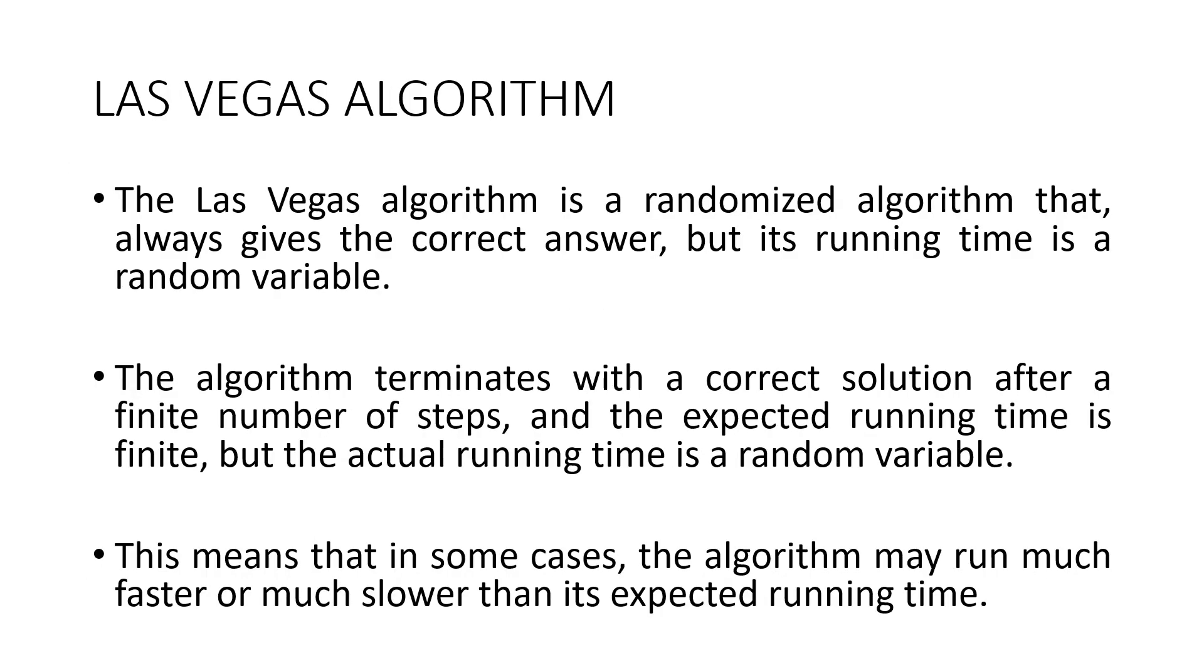Now, a Las Vegas algorithm is a randomized algorithm that always gives the correct answer but its running time is a random variable. The algorithm terminates with the correct solution after a finite number of steps and the expected running time is finite, but the actual running time is a random variable. This means that in some cases the algorithm may run much faster or much slower than its expected running time.